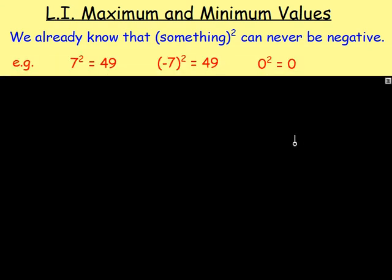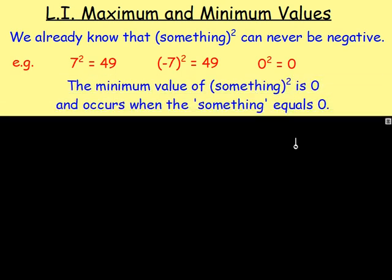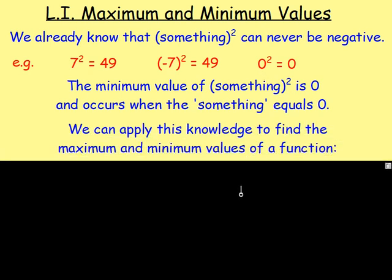Now if I asked you to square any number you like, the result can never be negative. If you square a positive number, you get a positive number. If you square a negative number, you get a positive number. If you square zero, you get zero. So the smallest value you can get whenever you square something is going to be zero, and this will occur when the number you are squaring is zero. You can apply that knowledge to find the maximum and minimum values of a function.